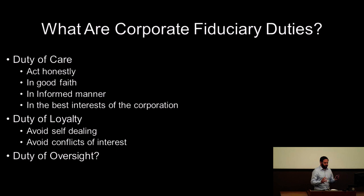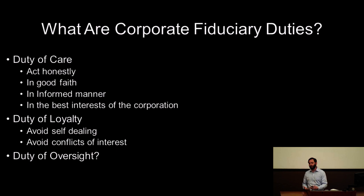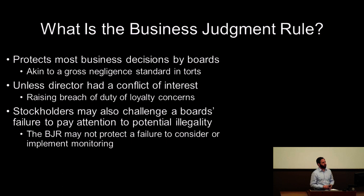That leads us to the business judgment rule — effectively a rule of deference to these particular agents because we want to maintain that separation of ownership and control. These duties in general: duty of care — to act honestly, act in good faith and in an informed manner in the best interest of the corporation; duty of loyalty — avoid self-dealing, avoid conflicts of interest. The duty of oversight has really blurred the lines between these two doctrines, because the duty of a corporate officer to institute oversight dashboards and make sure the business is not engaged in illegal or super risky activity has been framed as both a duty of care and a duty of loyalty issue.